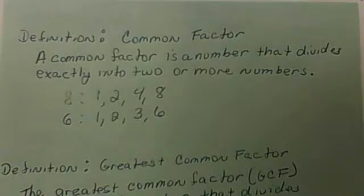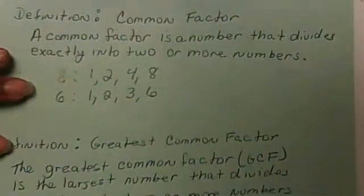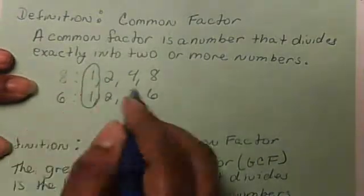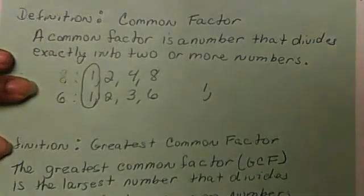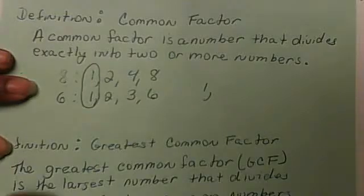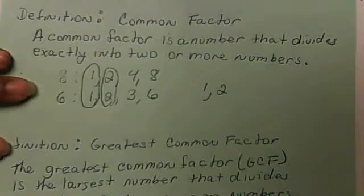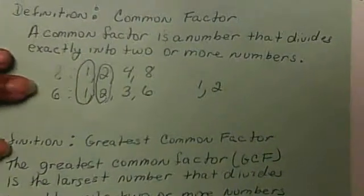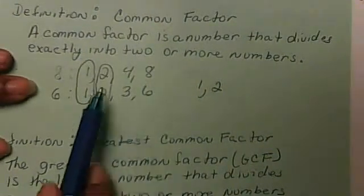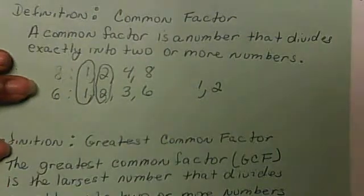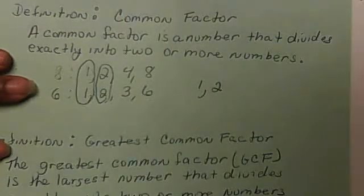So 8 and 6 have some common factors. They have 1 as a common factor, which all numbers do. They also have 2 as a common factor. So a common factor is a number that divides exactly into two or more numbers, which both of these divide exactly, meaning without a remainder.